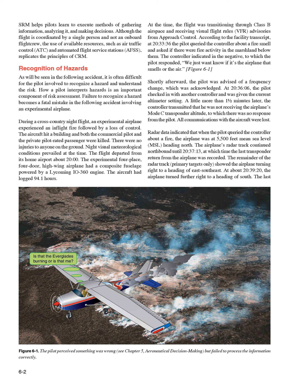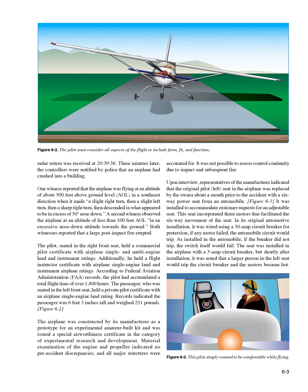The airplane's radar track continued northbound until 20:37:13, at which time the last transponder return was recorded. Primary radar targets only showed the airplane turning right to a heading of east-southeast. At about 20:39:20, the airplane turned further right to a heading of south. The last radar return was received at 20:39:36. Three minutes later, controllers were notified by police that an airplane had crashed into a building.